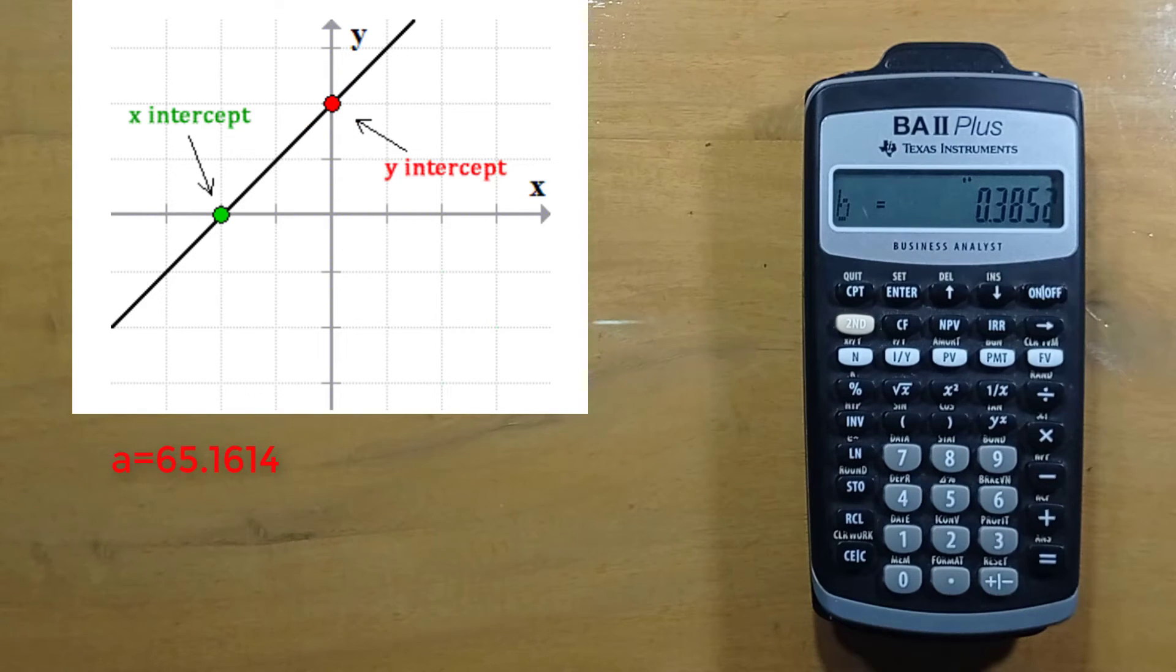b is the slope. It is equal to 0.3852. This is the amount of change in y for one unit of change in x. That is, if x is increased or changed by one unit, then y will be increased or changed by 0.3852.